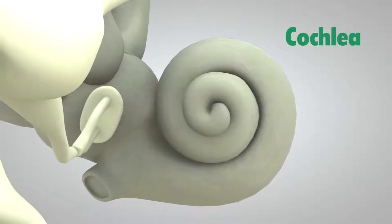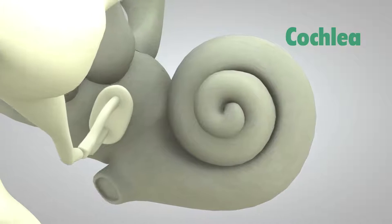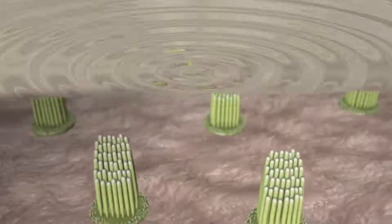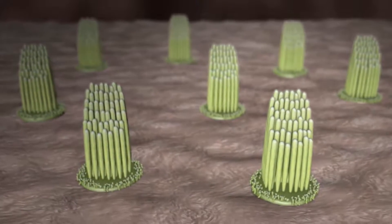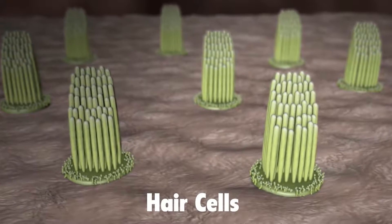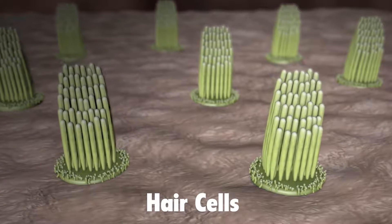The cochlea is shaped like a snail and is the size of a garden pea. It is filled with fluid, and the sound vibrations make this fluid ripple, which creates waves. Hair-like structures called stereocilia sit on top of hair cells and are grouped together as hair cell bundles inside the cochlea.